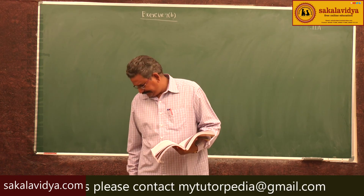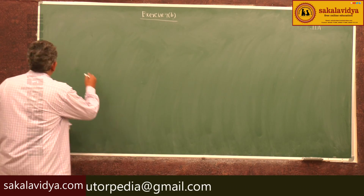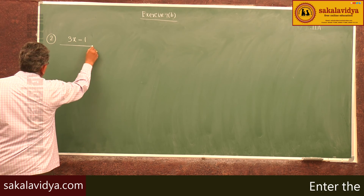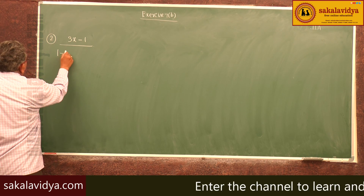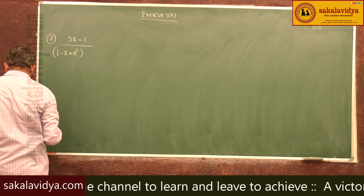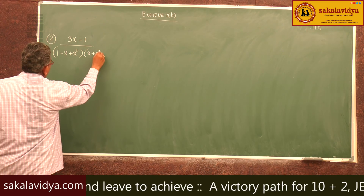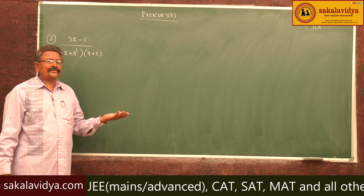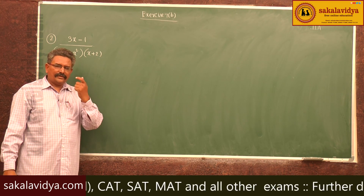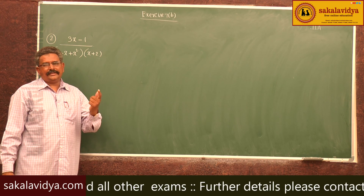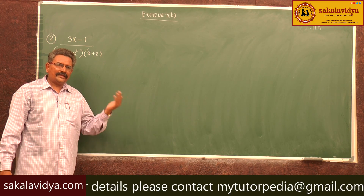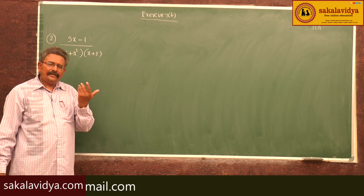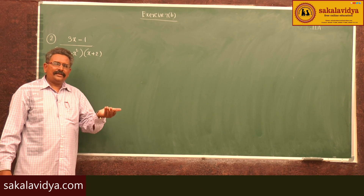Second problem: resolve (3x - 1) / [(1 - x + x²)(x + 2)] into partial fractions. In this case, (1 - x + x²) is an irreducible quadratic factor, so there exists a partial fraction of the form (Ax + B)/(x² - x + 1), and (x + 2) is a linear factor giving C/(x + 2).